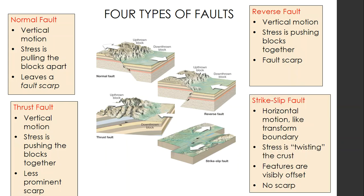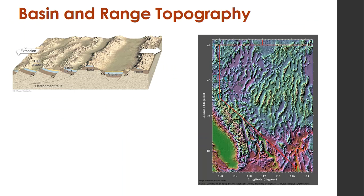The last is a strike-slip fault, and that's from horizontal motion — like a transform boundary. The stress is from the twisting of the crust as it pushes past itself. The features are just this visibly offset landscape. You can see a river that used to line up but now is offset — you get no visible scarp.